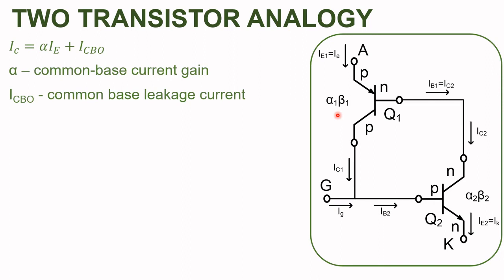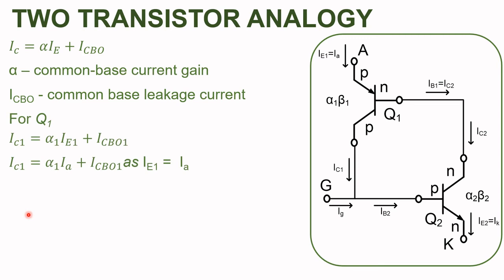The common base current gain is given by alpha and the common base leakage current is given by ICBO. For any transistor, the collector current IC equals alpha times IE plus ICBO. For transistor Q1, we can write IC1 equals alpha1 times IE1 plus ICBO1. From the figure, IE1 equals the anode current IA, so IC1 equals alpha1 IA plus ICBO1.